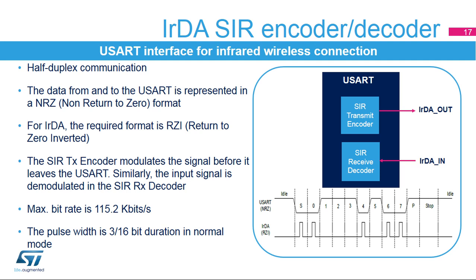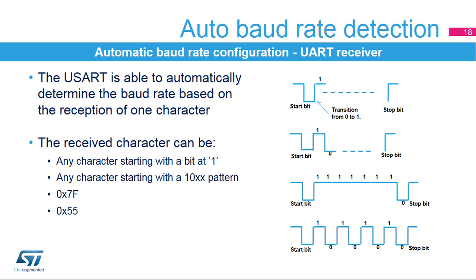In normal mode, the transmitted pulse width is specified as 3/16ths of a bit period. The USART receiver is able to detect and automatically configure the baud rate based on the reception of any one of the following characters. The received character can be any character starting with a bit at 1; in this case the USART measures the duration of the start bit from falling edge to rising edge. Any character starting with a 10XX pattern; in this case the USART measures the duration of the start and of the first data bit. The duration is measured from falling edge to falling edge, ensuring better accuracy in the case of slow signal slopes.